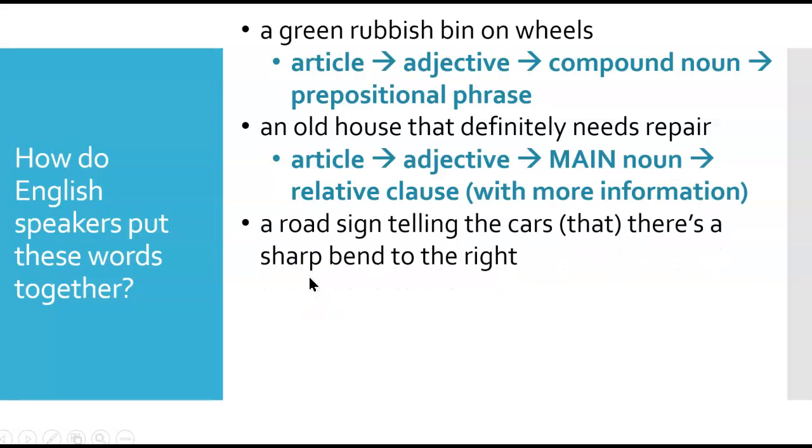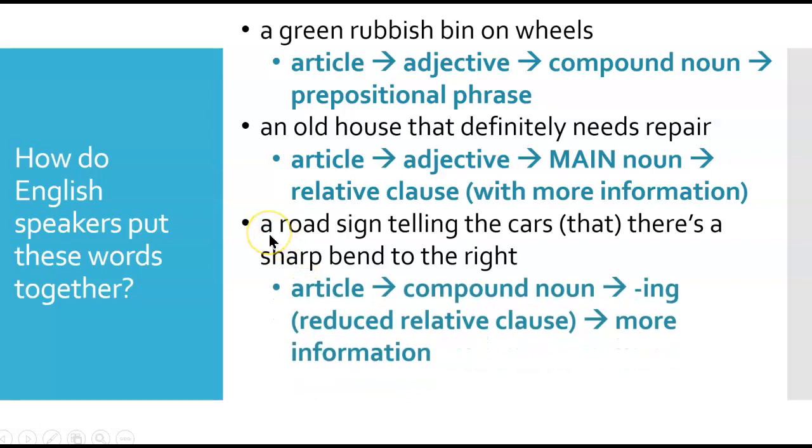Now, the next one is probably the most complicated. We've got article 'a', road sign is a compound noun. Then we've got telling, I-N-G, and then all of this more information. Telling is a reduced relative clause beginning. Now, don't worry about it. Just try and use it.